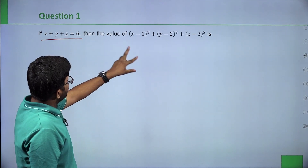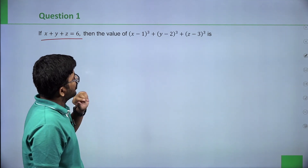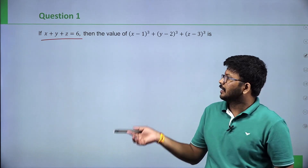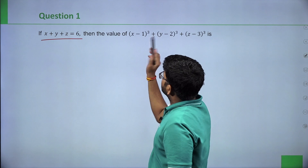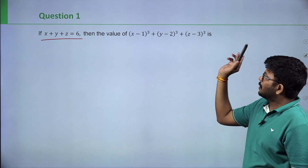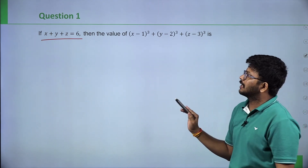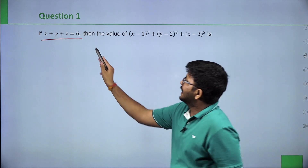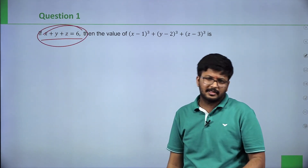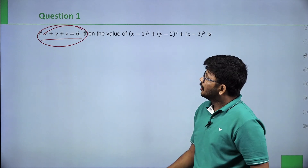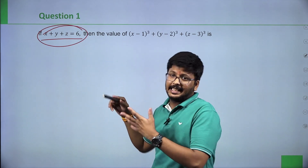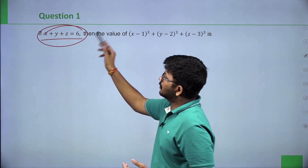...x minus 1 the whole cube plus y minus 2 the whole cube plus z minus 3 the whole cube. The hint given is x plus y plus z is equal to 6. So we have 3 numbers x, y, z and when we add them all we get 6.